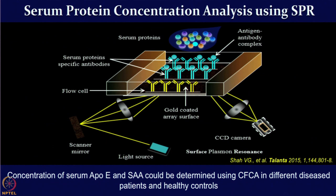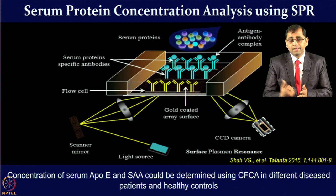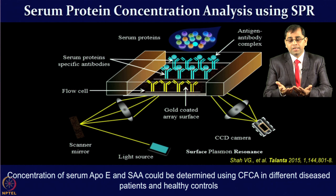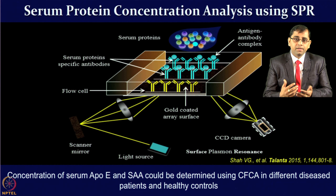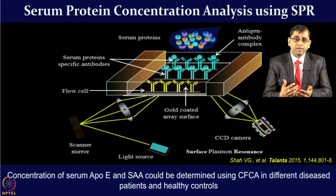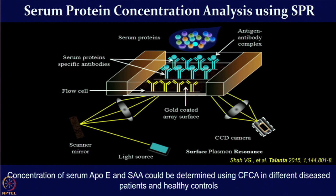Our own group and others have also started using these technologies for interesting applications beyond the standard workflow. For example, we have used SPR to measure protein concentration from serum samples. Rather than relying on an ELISA kit, we measure binding of serum biomarkers on the gold chip by passing complex serum samples and observing unique binding interactions. We have also developed innovative ways of measuring interactions using CFCA — calibration-free concentration analysis — for different types of serum protein measurement.